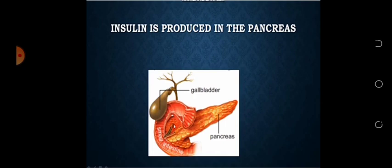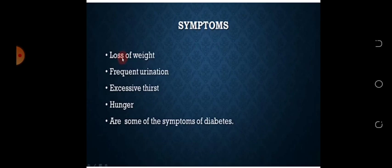Symptoms یعنی علامات - diabetes کے symptoms کیا ہیں؟ پہلا ہے loss of weight، یعنی وزن میں کمی ہونا شروع ہو جاتی ہے۔ دوسرا ہے frequent urination، بہت زیادہ urine آتا ہے۔ تیسرا ہے excessive thirst، بہت زیادہ پیاس لگتی ہے۔ چوتھا ہے hunger، بہت زیادہ بھوک لگتی ہے۔ یہ تمام diabetes کے symptoms ہیں۔